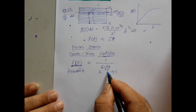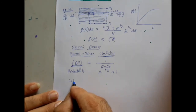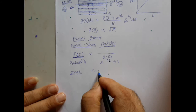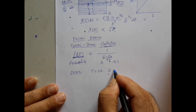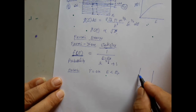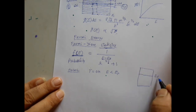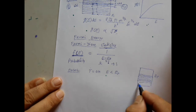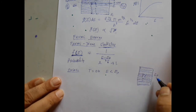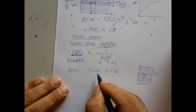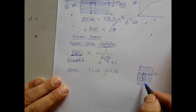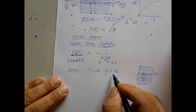Let us examine this distribution with respect to temperature through three different cases. Case 1: at absolute zero Kelvin with electron energy less than the Fermi energy. At this condition, all energy levels below the Fermi level are occupied by electrons, and we expect 100% probability. Substituting into the equation: E minus EF is negative, divided by K times T equals 0, giving e^(−∞), which equals 0. Therefore F(E) = 1/(0+1) = 1, confirming 100% probability.